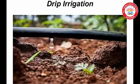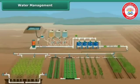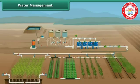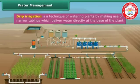Have you heard about drip irrigation? Drip irrigation is a technique of watering plants by making use of narrow tubes which deliver water directly at the base of the plant. A farmer using drip irrigation in his field can also use water economically.